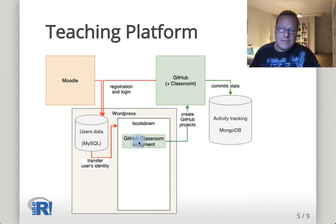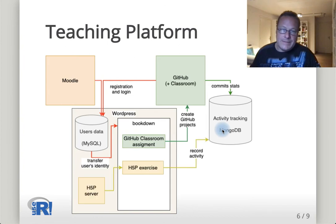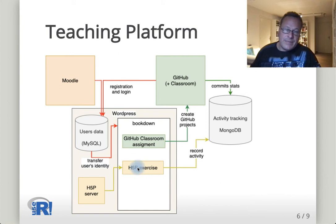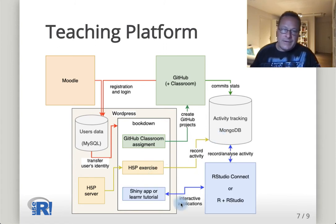Inside the Bookdown pages, one can create a GitHub Classroom assignment, create GitHub projects for students, and then track their activity — like commit statistics — inside a MongoDB database. One can also integrate H5P exercises, using a WordPress server to serve these exercises directly inside the Bookdown pages and record the activity in the database.